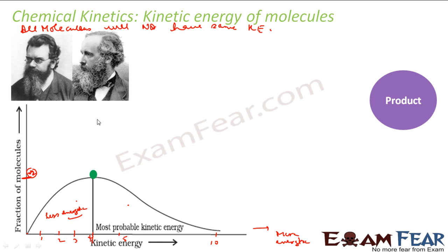The peak tells us the kinetic energy of the maximum number of molecules. If there are 100 molecules, maybe 20 particles will have this kinetic energy, and the rest 80 will be distributed on either side — some having more, some having less — all along this curve. Most of them will have the average kinetic energy, forming a bell curve distribution.